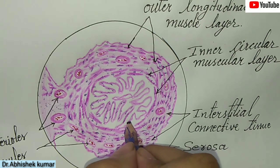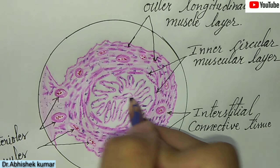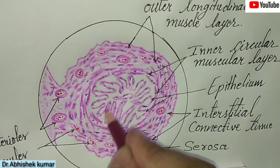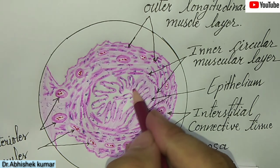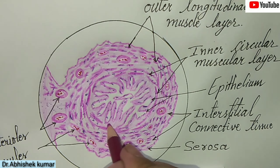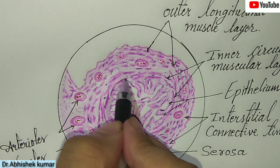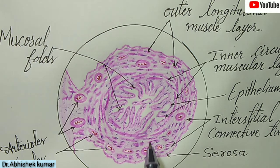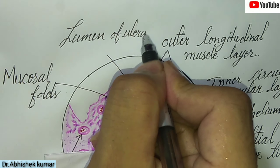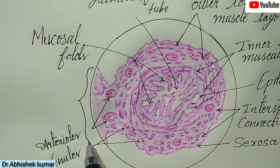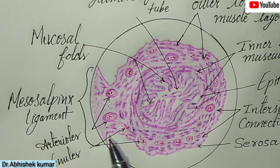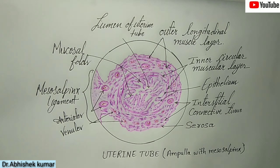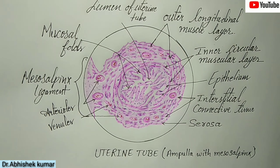The mucosa of the uterine tube consists of a simple columnar ciliated and non-ciliated epithelium. The mucosa of the ampulla exhibits the most extensive mucosal folds, which form an irregular lumen in the uterine tube. Here is the mucosal fold, here is the lumen of the uterine tube, and here is the mesosalpinx ligament completing the uterine tube structure along with the ampulla.